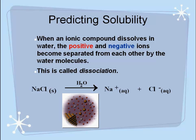When an ionic compound dissolves in water, the positive and negative ions become separated from each other by the water molecules. This is called dissociation, or ionization. We talked about this in the last video, so I just want to review it real quick. Here we have our sodium chloride solid. When it dissolves in water, it forms the sodium ion and the chlorine ion, because the water molecules are able to get in between the sodium and chlorine and pull them apart and dissociate them from the compound.